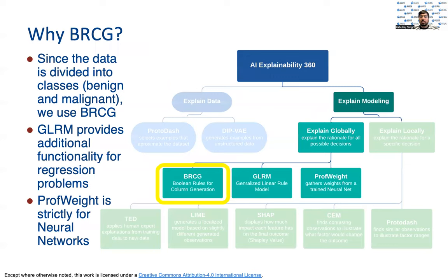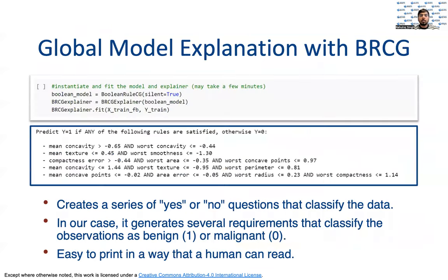So why BRCG? Since our data is divided into classes — benign and malignant — it fits well for the Boolean rules governed by BRCG. If we were working with a problem that provided numerical predictions, we would have used GLRM. And if we were using a neural network, we would have used prof weight. BRCG is short for Boolean Rules via Column Generation. A Boolean rule is a yes or no rule, and BRCG creates a series of yes or no questions that classify the data.